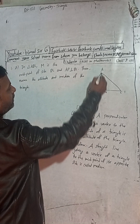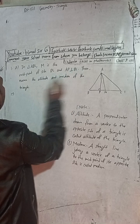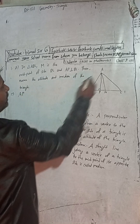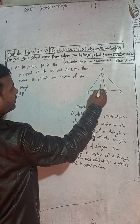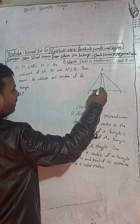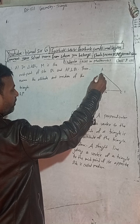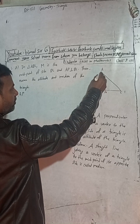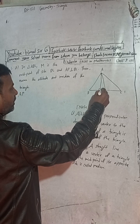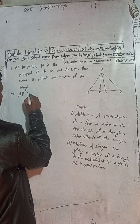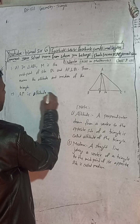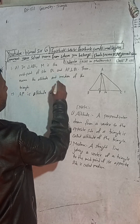Now, name the altitude. The altitude is AP. Why? Because AP is a perpendicular drawn from vertex A to the opposite side BC of the triangle. A perpendicular drawn from a vertex to the opposite side of a triangle is called the altitude. So, AP is the altitude.